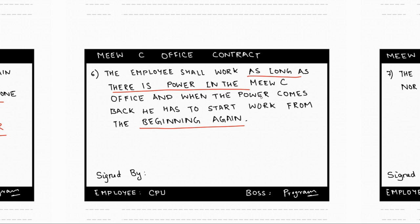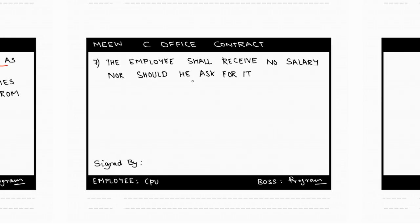So as long as there is power in the MUC room, the employee has to keep working, and if there is a power down and the power comes back again, he has to start working from the first instruction again. The seventh term reads that the employee shall receive no salary, nor should he ask for it. This is a pretty harsh contract — the boss is very strict and expects his employee to do whatever he instructs, and the employee has no choice but to comply in order to keep the job.